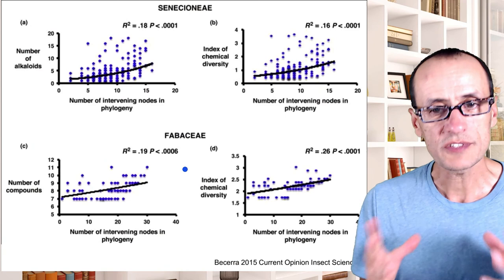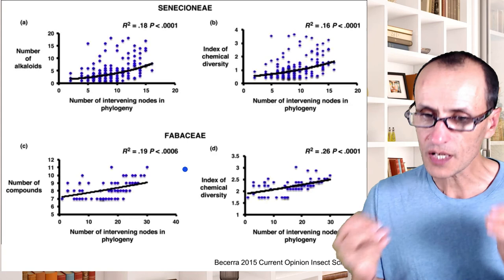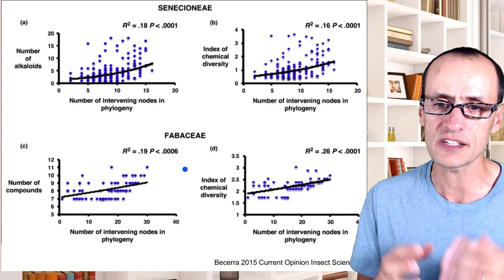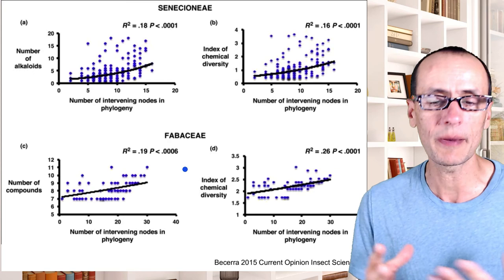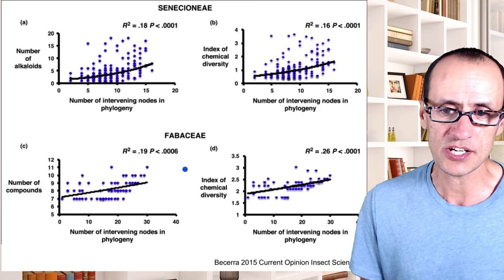Taken together, the mechanisms proposed by Ehrlich and Raven are actually observed in some of these lineages. There is more rapid diversification of lineages of both insects and plants, and fewer and fewer insects have been able to overcome these more specialized defenses. All of this points in the direction that yes, there's something special about the interaction between insects and plants that allows them to reciprocally respond to each other, and this may have an effect on the rates of speciation between them.